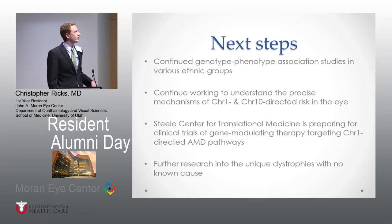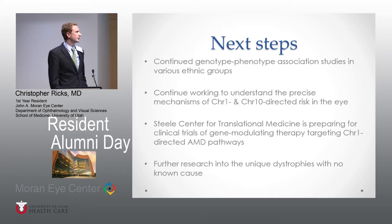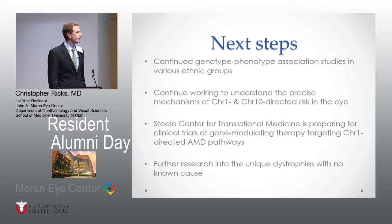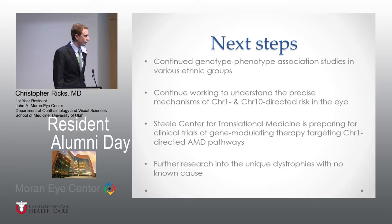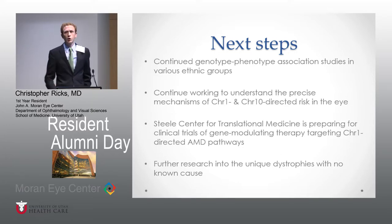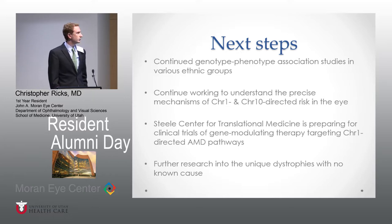We're really trying to understand the differences in chromosome 1 and chromosome 10. Currently, Dr. Hageman and his group at the Still Center for Translational Medicine are preparing for clinical trials of a gene-modulating therapy that targets chromosome 1, which is really exciting. It shows a lot of promise, and if that works for chromosome 1, then that can treat a large section of the AMD population. The next step would be to work on chromosome 10, and then down the road we could realistically see a cure for macular degeneration. And then further research into these unique dystrophies with no known cause.